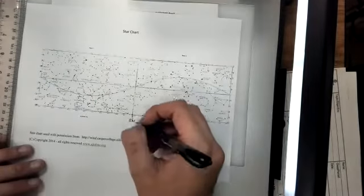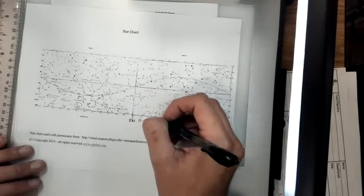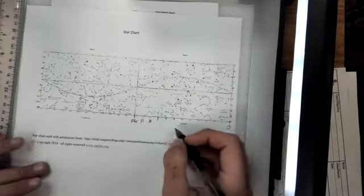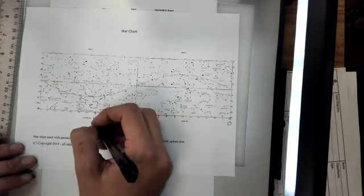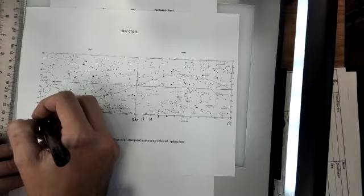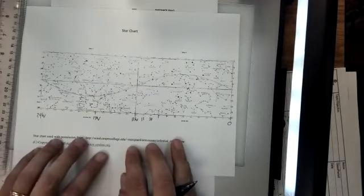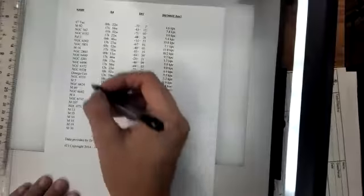So this is 12 hours, and then it counts down 11, 10, 9, 8, 7, down to zero over here. 12 increases to 13, 14, 15, 16, there's 17 hours of right ascension there, all the way up to 24 hours.